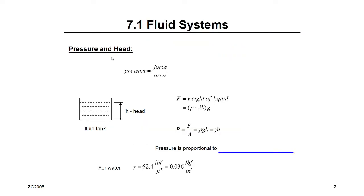I'm sure all of you know this from fluid dynamics or fluid mechanics. The pressure on the head: pressure is force over area from physics. If you have a tank, the pressure will be the weight of the liquid divided by the cross-sectional area. The weight of the liquid is ρg times the volume. If you divide by the area, you are left with ρgh, where h is the head — the height of the elevation of the fluid level inside the tank.